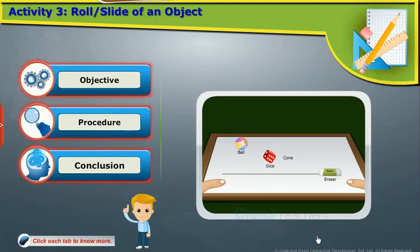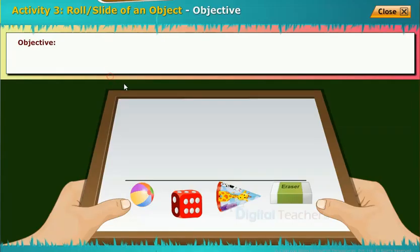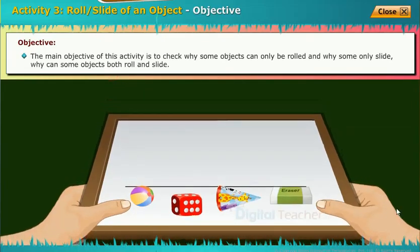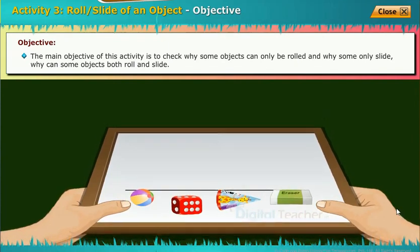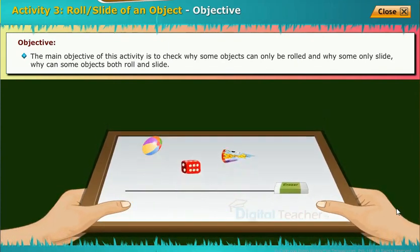Click each tab to know more. The main objective of this activity is to check why some objects can only be rolled and why some only slide. Why can some objects both roll and slide?